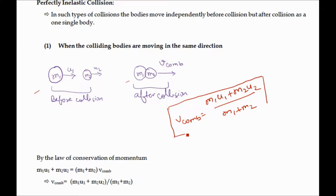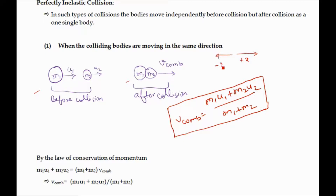Here u1 is the velocity of mass m1 and u2 is the velocity of mass m2. Both bodies are moving in the same direction, so we write a positive sign. We consider this direction as positive x and the opposite direction as negative x.